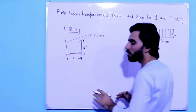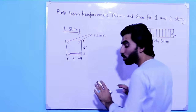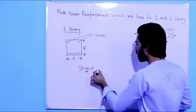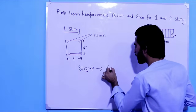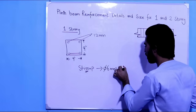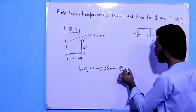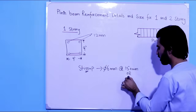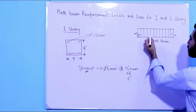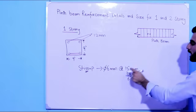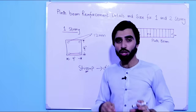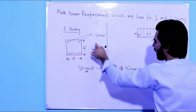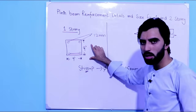Now for the stirrup diameter and spacing: use 6 mm diameter steel bars with a spacing of 150 mm, which is approximately 6 inches. Do not use less than 6 mm diameter steel bars for stirrups in a plain beam.